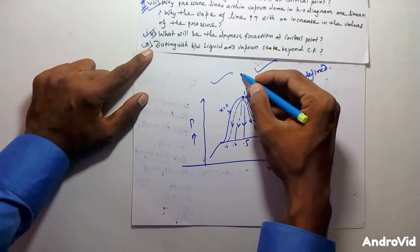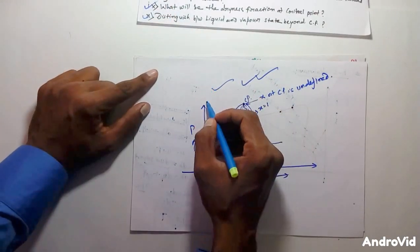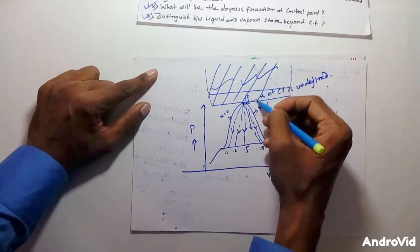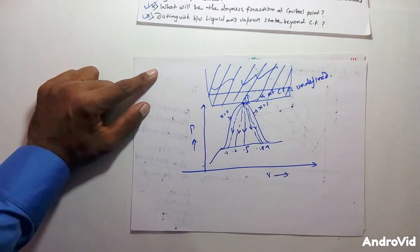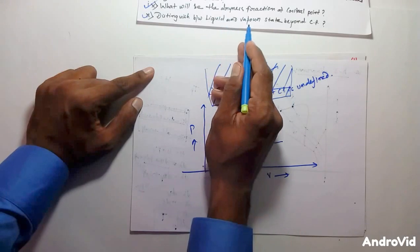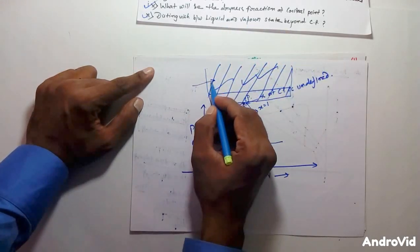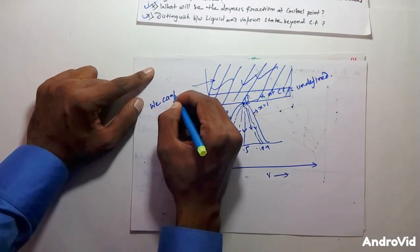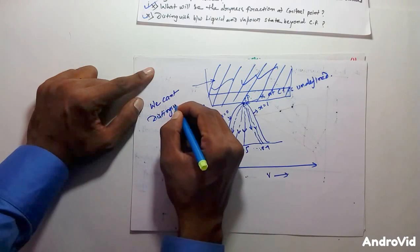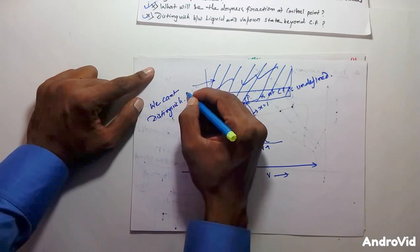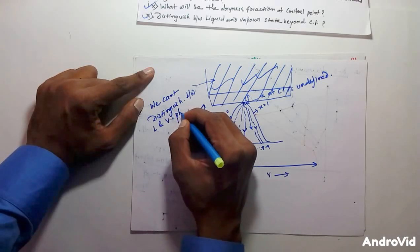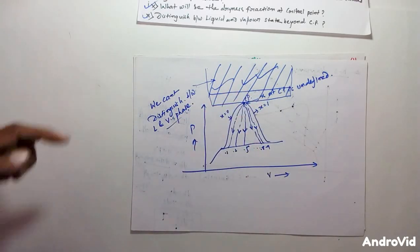For question ten, the region beyond the critical point is shown here. Beyond the critical point, we cannot distinguish between the liquid and vapor phases. So we must keep in mind: beyond the critical point, we can't distinguish between liquid and vapor phase. This completes all ten mechanical engineering interview questions.